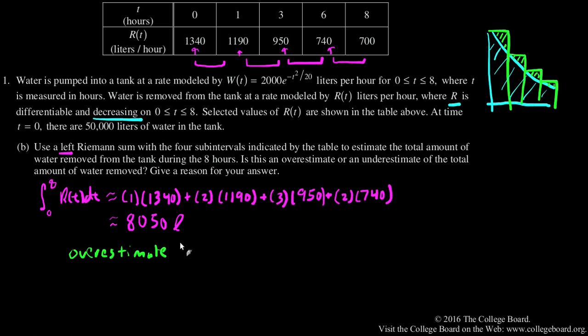And you can say any number of things. The fact that it is decreasing and we're using left Riemann sums, that's good enough. If you want to be more clear about it, it's an overestimate because every rectangle lies above the curve. Thank you.